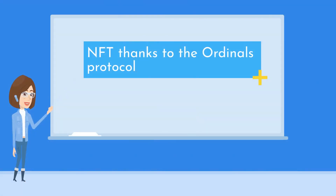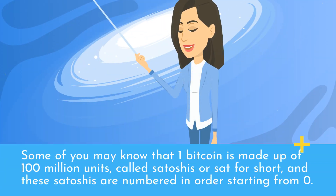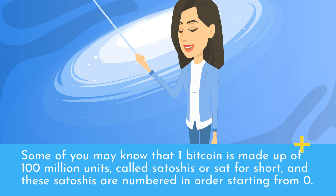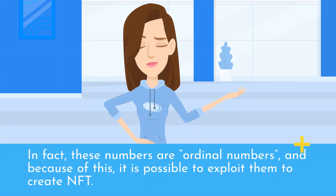NFTs on Bitcoin use the Ordinals protocol. Some of you may know that one Bitcoin is made up of 100 million units called Satoshis, or Sats for short, and these Satoshis are numbered in order starting from zero. In fact, these numbers are ordinal numbers, and because of this it is possible to exploit them to create NFTs.